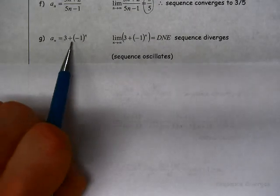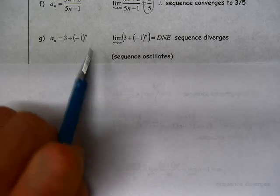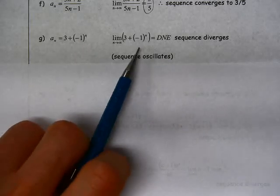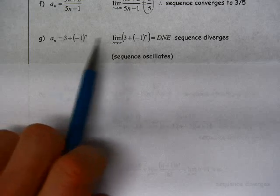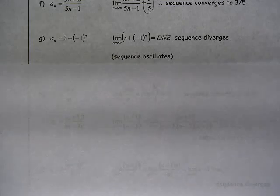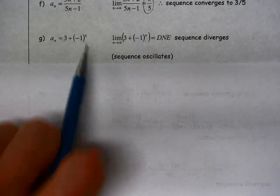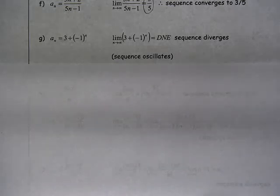Next one, I have 3 plus a negative 1 to the n. In this case, this sequence just oscillates back and forth from 2 to 4 to 2 to 4 to 2 to 4, as we use even and odd powers of that negative 1.